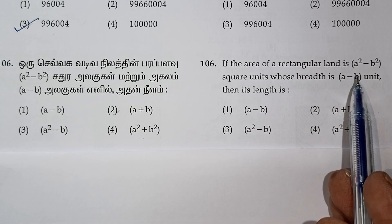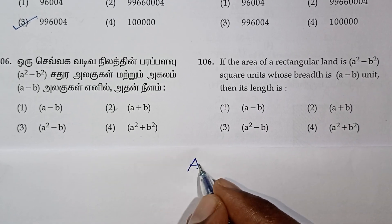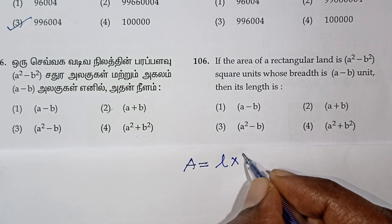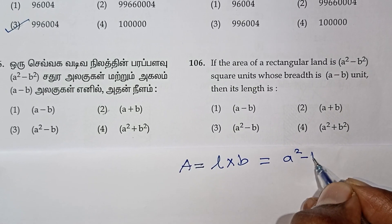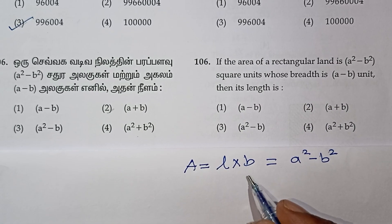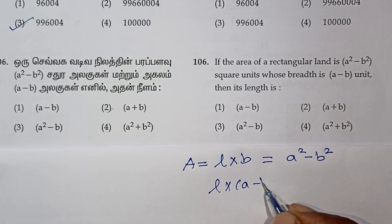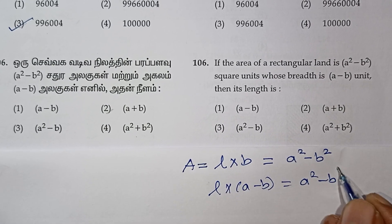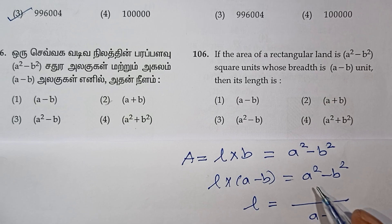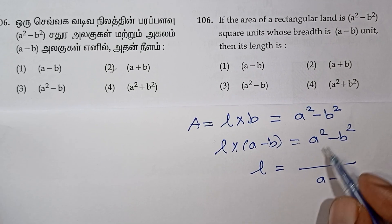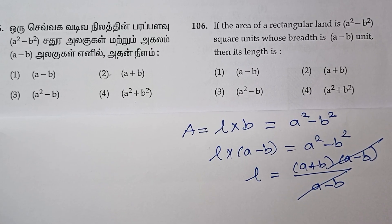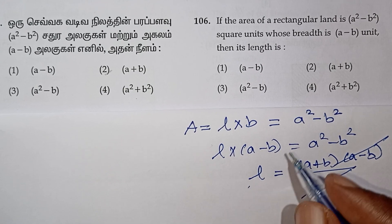The area of a rectangular field is a² minus b². Area equals L times b, which equals a² minus b². Since a² minus b² equals (a + b)(a − b), the breadth is a minus b, and cancelling (a − b) from both sides, the length is a plus b. So a plus b is the answer — the second option.